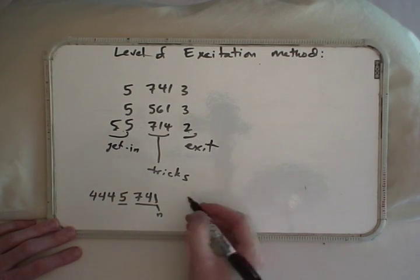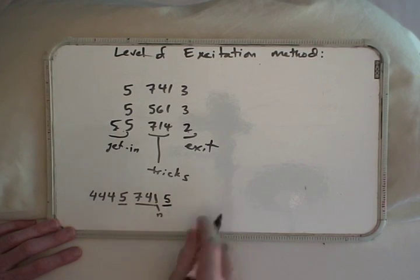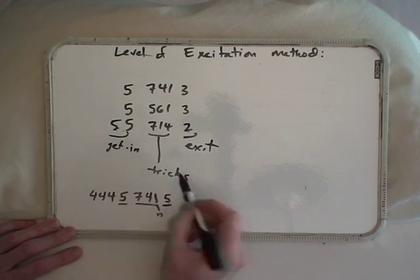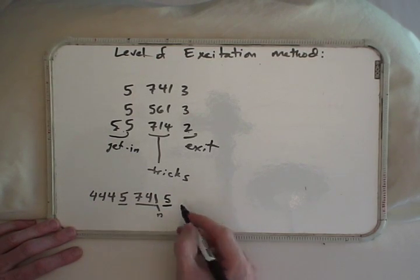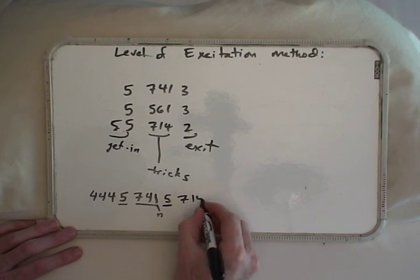It's pretty clear what we need to do is we need another 5 to get us into 2 fives worth of excitation, and then we could do 714.